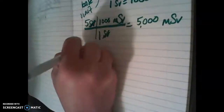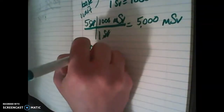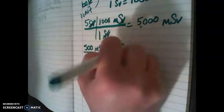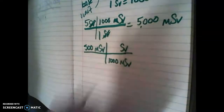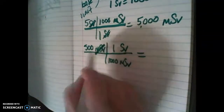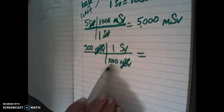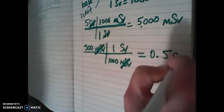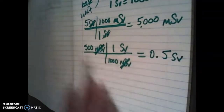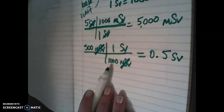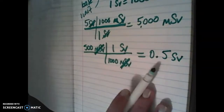Let's try another one with fives. 500 millisieverts — we'll go the opposite way — is going to be equal to how many sieverts? I know my conversion factor: I put millisieverts on the bottom and sieverts on the top. I have 1,000 millisieverts to 1 sievert. Our units cross out, so I have 500 divided by 1,000, which comes out to 0.5 sieverts. That makes sense — 500 millisieverts is half of a thousand millisieverts, and so that's half of a sievert.